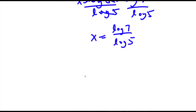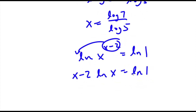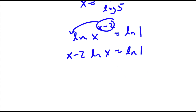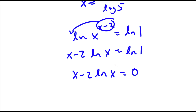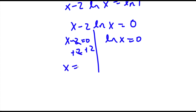Going back to our problem: x minus 2 times ln x equals ln 1, and ln of 1 equals 0. So I have x minus 2 times ln x equals 0. This gives me two equations: x minus 2 equals 0, which gives x equals 2; and ln x equals 0, which gives x equals 1. So we have two solutions: x equals 2 and x equals 1.